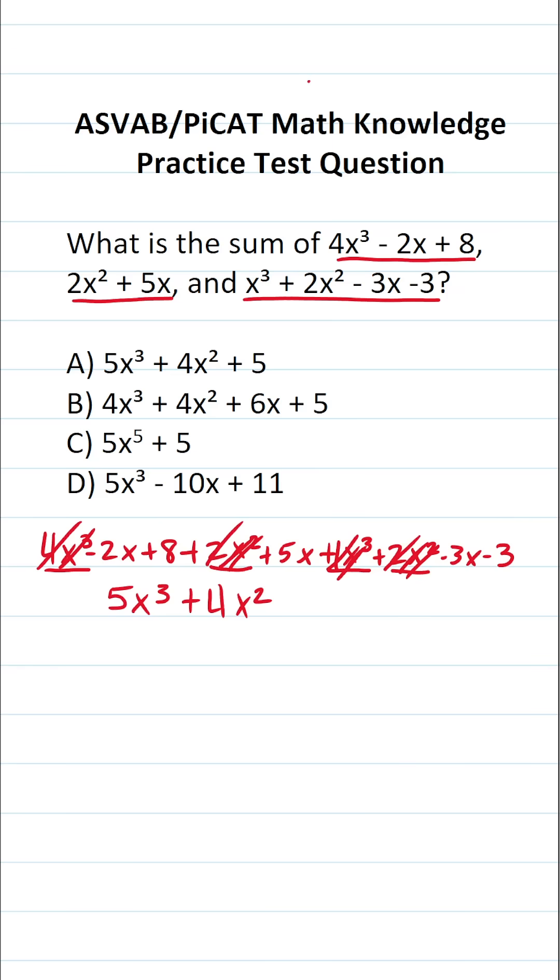All right, so the next terms we're going to be adding are going to be x to the first power. So we have -2x, 5x, and -3x. -2x + 5x is going to be 3x. So I added those two. Let's cross them out. And now we have 3x - 3x. 3x - 3x is 0. So these just go away. And then finally, we have our whole numbers, 8 - 3 is 5.